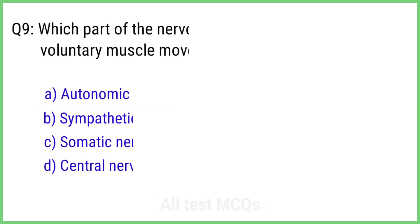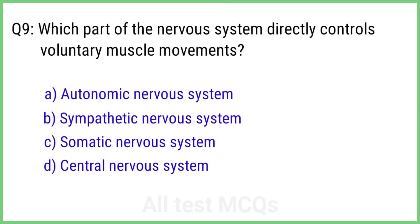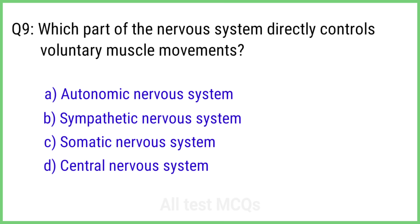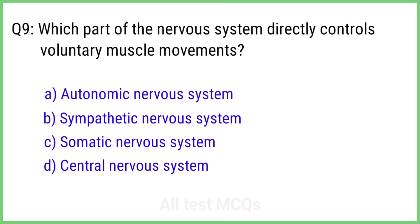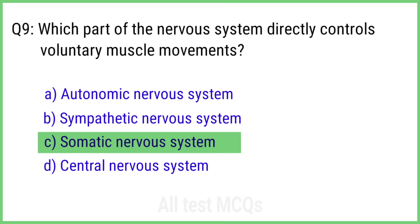Question 9. Which part of the nervous system directly controls voluntary muscle movement? The right answer is option C: Somatic nervous system.